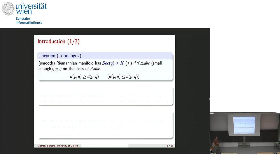In the Riemannian setting we can characterize sectional curvature bounds by triangle comparison. A smooth manifold has sectional curvature bounded below by k if for all small enough triangles, you take two points p, q on the sides and compare distances. You compare the distance pq with the distance in a model space of constant curvature k, where you take a corresponding triangle with the same side length — unique up to isometry. If all distances are bounded below by the model space distance, then sectional curvature is bounded below by k, and the same holds for curvature bounded above by k.